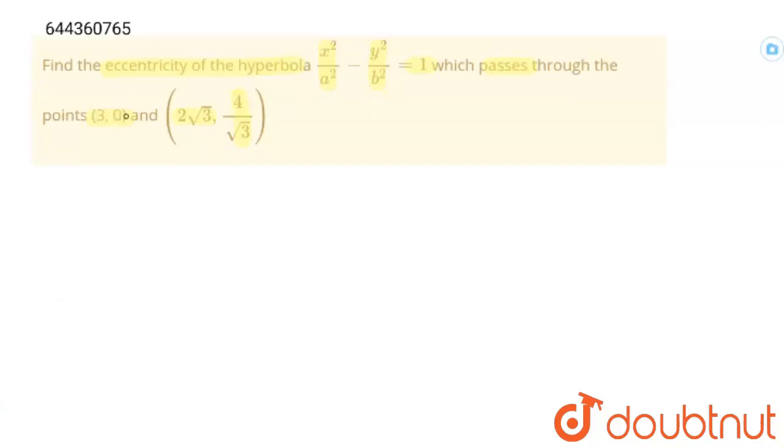See, for this hyperbola first of all I am going to find the equation of hyperbola. And for that we have to find a² and b². There are two variables and two information are given.